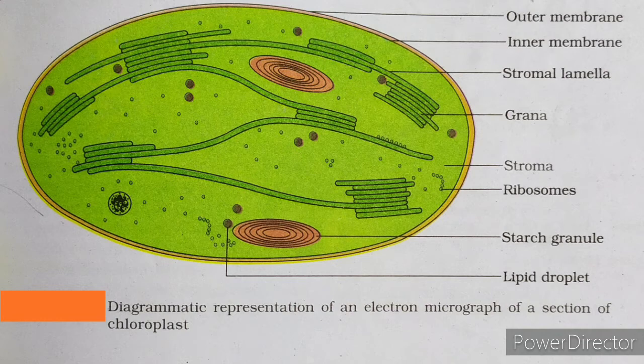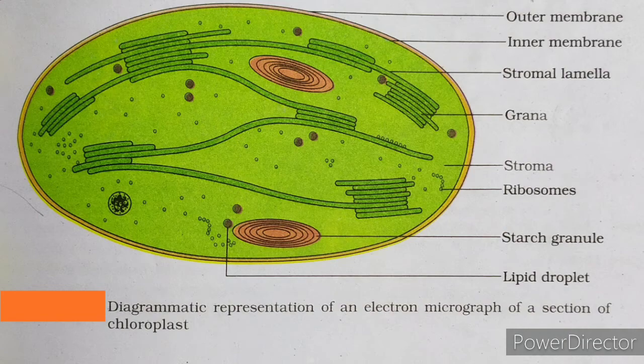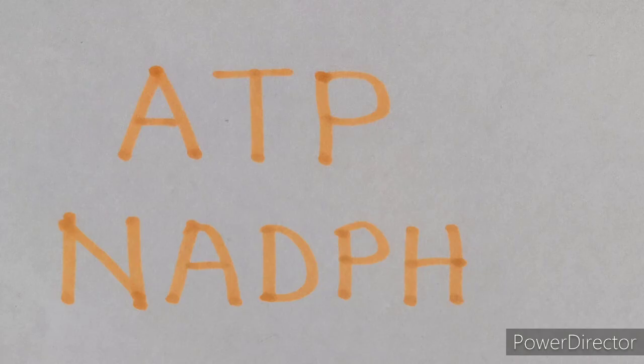The stroma is the aqueous fluid. There is a clear division of labour within the chloroplasts. You can see there is an outer membrane, an inner membrane, stromal lamella, grana, stroma, ribosomes, starch granule, and lipid droplet. The membrane system in the chloroplasts is responsible for trapping the light energy and also for the synthesis of ATP and NADPH.